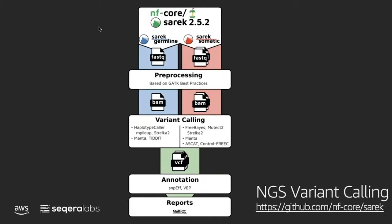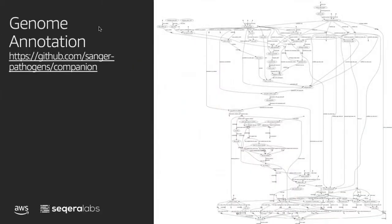If we think about a genomics pipeline, we have a series of steps and we process some data through these steps — this is a very idealized view of what it is. Each of these is a piece of software where we're running some analysis through, and in reality these pipelines are much more complex than this. Here's an example of a genome annotation pipeline where each circle is a script or a containerized task, and you can see that the management and construction of these pipelines becomes an extremely difficult part.